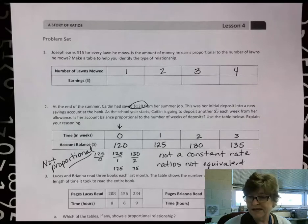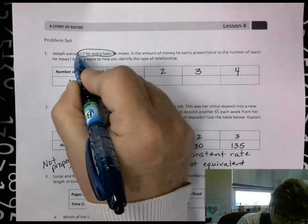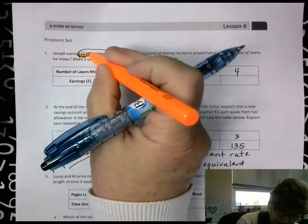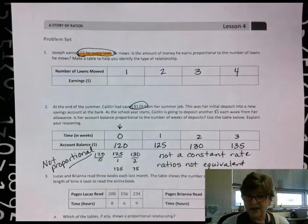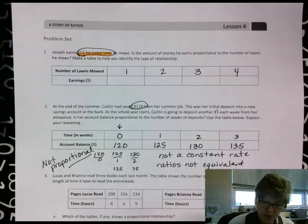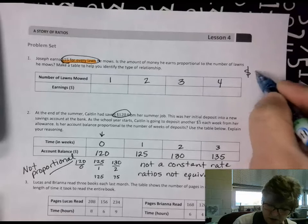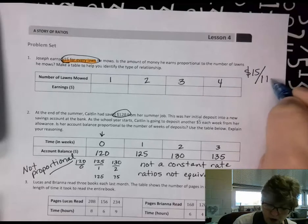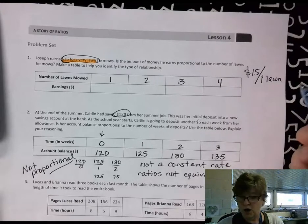Joseph earns $15 for every lawn he mows. That's important because every lawn, so think about if we were to write that as a ratio or in fraction form, I would have $15 per one lawn, or $15 per lawn.